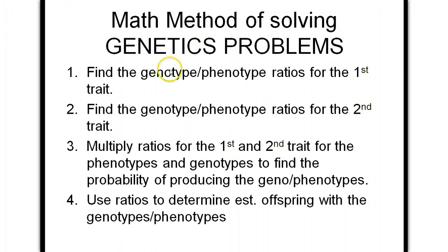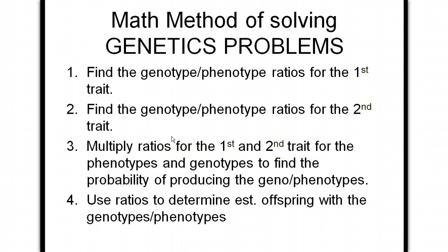The first rule is that you have to find the genotype or phenotype ratios for the first trait, and you analyze that trait separate from the second trait. The next step is to analyze the genotype-phenotype ratios for the second trait. Then you multiply those ratios together to find out the probability of producing the offspring with the trait you're looking for in the problem.